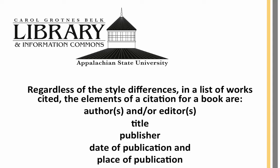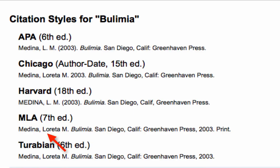Regardless of style differences, in a list of works cited, the elements of a citation for a book are: authors and/or editors, title, publisher, date of publication, and place of publication.